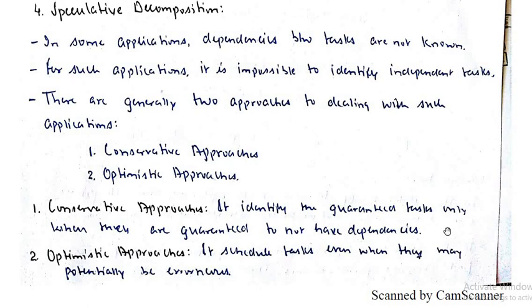The optimistic approach schedules tasks even when they may potentially be erroneous. We know there might be errors, but we optimistically proceed with a trial-and-error approach.